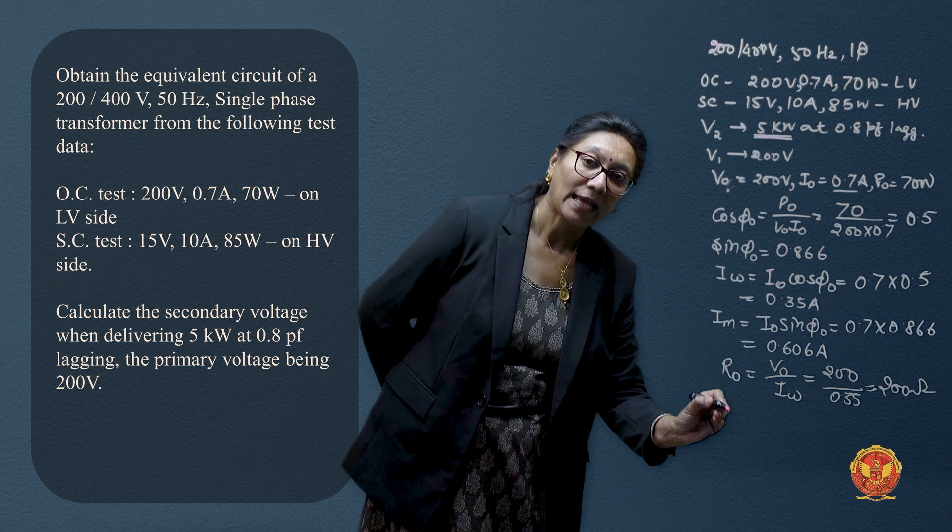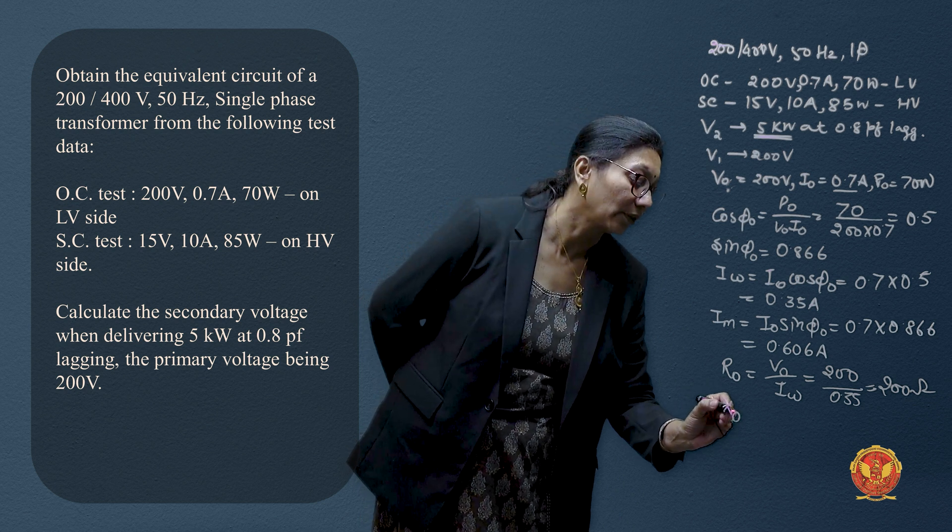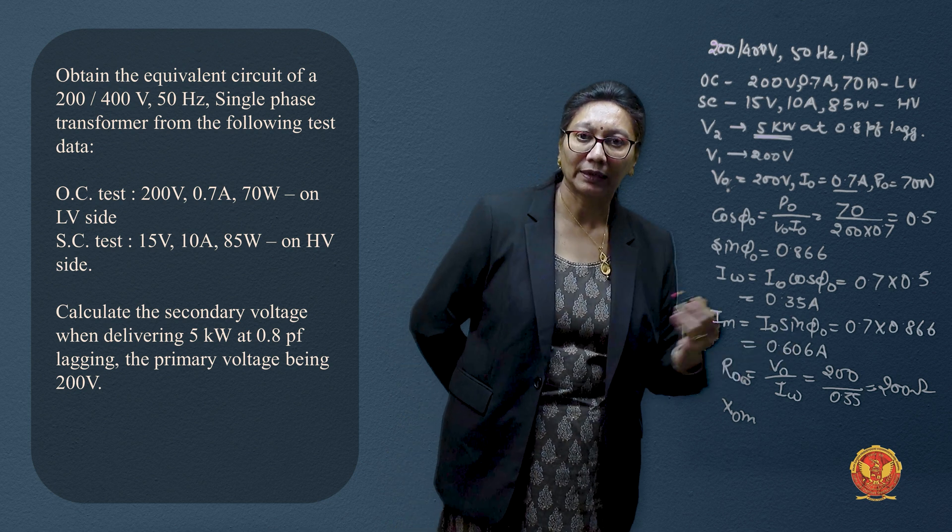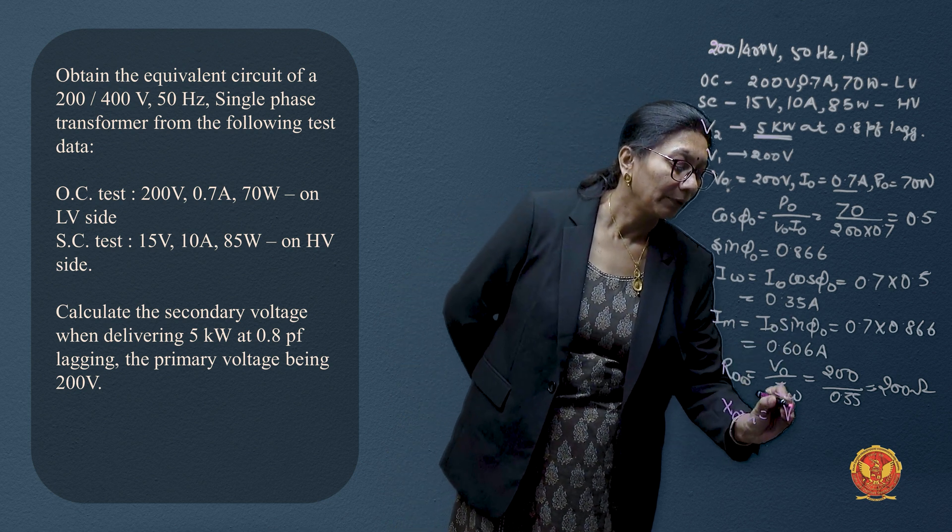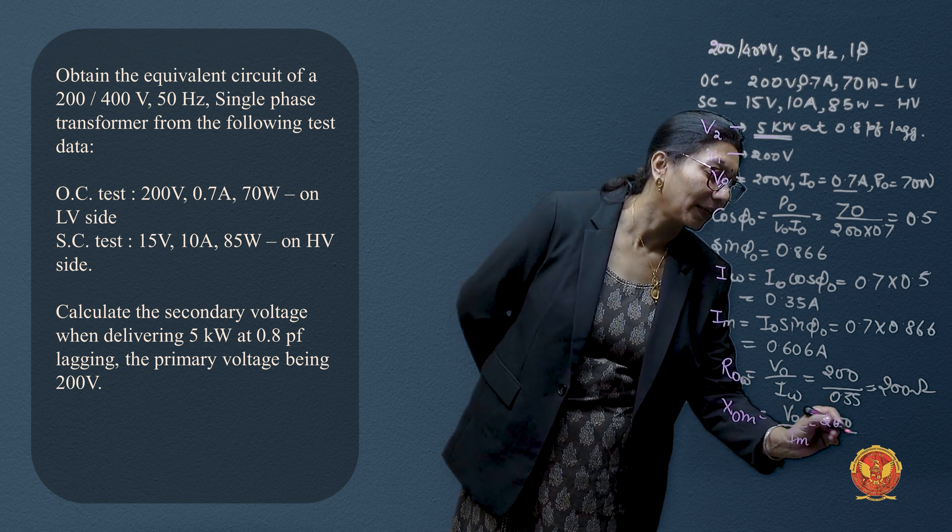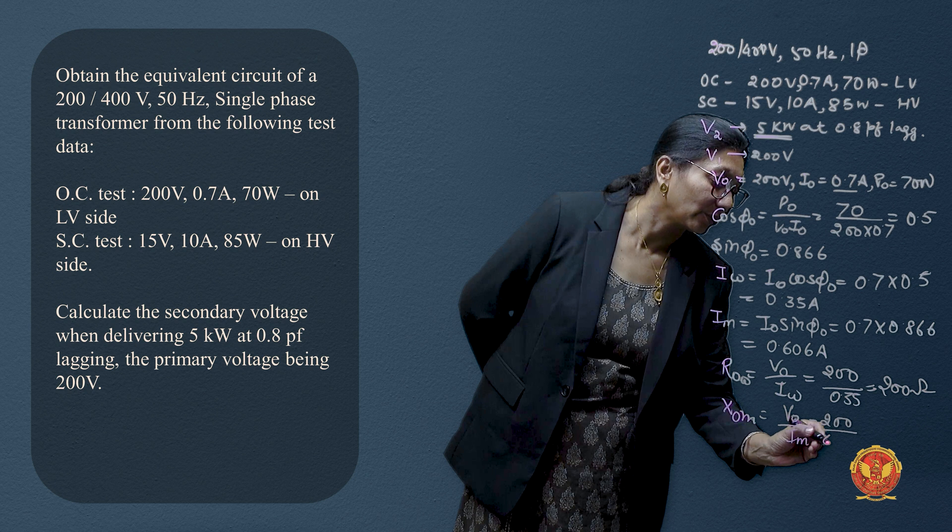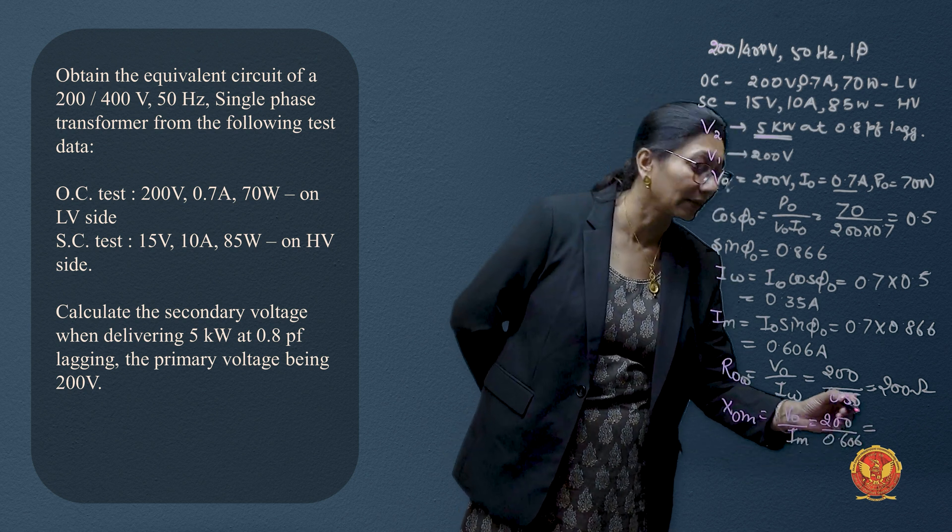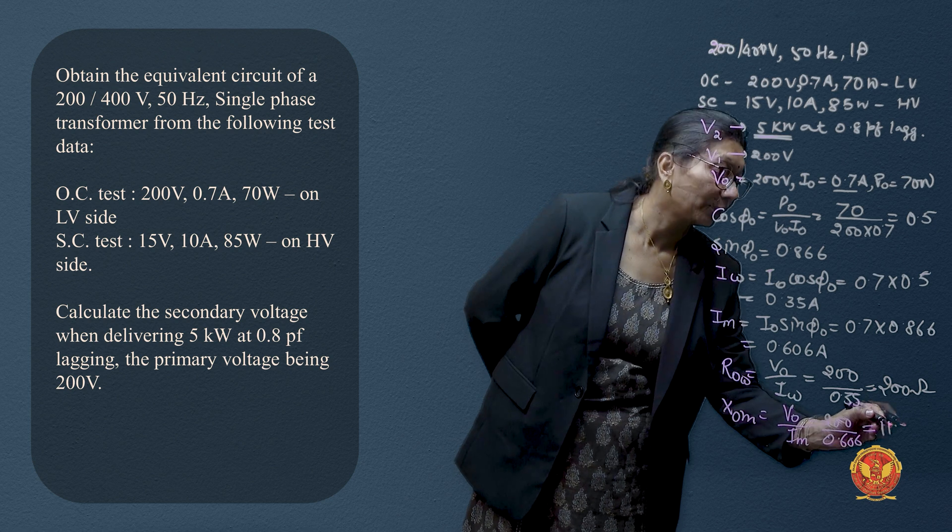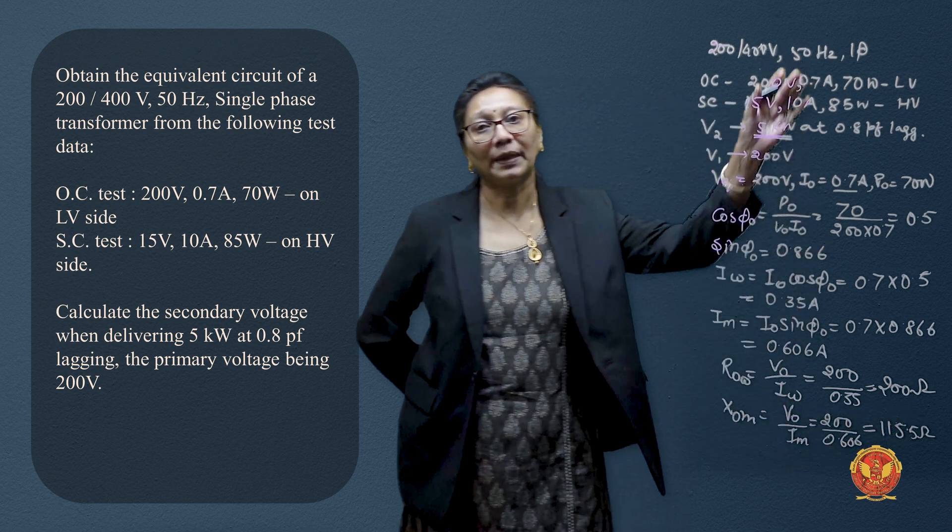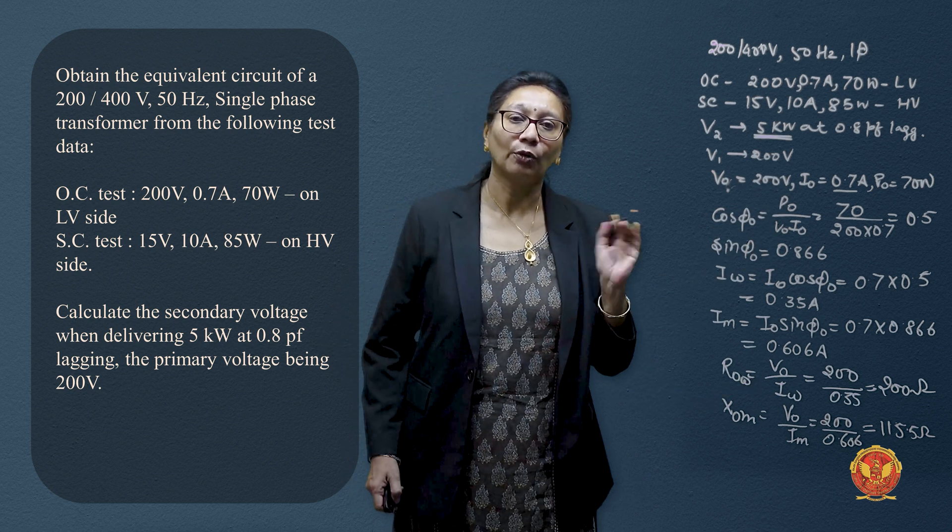Similarly, Xm or X0, we can denote them normally. This will be V by Im which will be 200 divided by 0.606. So this will give you 330 ohms. This is our shunt branch component from open circuit test.